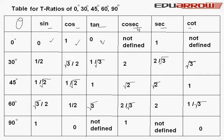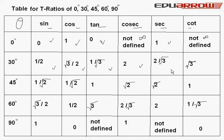Cot 0 degree is not defined — it is equal to infinity. Sin 30 degree is equal to 1 by 2. Cos 30 degree is equal to root 3 by 2. Sec 30 is equal to 2 by root 3 and cot 30 is equal to root 3. And so on, as you can see in the table.